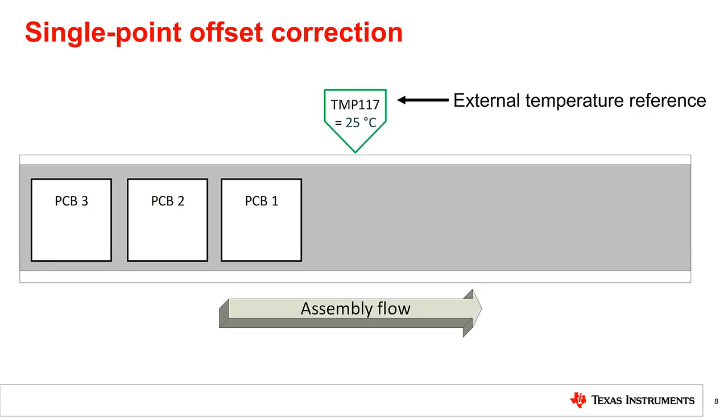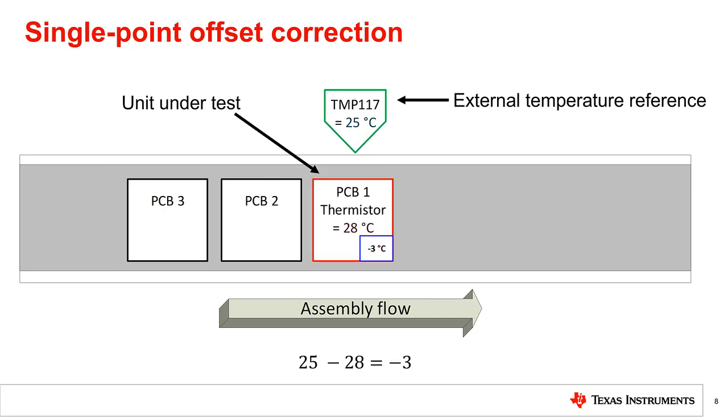A single point offset calibration at room temperature is a very simple, automatic, and fast process to guarantee the best possible accuracy for a linear PTC thermistor without the need for a temperature chamber. Let's take, for example, a small build of three PCBs ready to be powered up. Once the unit under test powers up for the first time, it will use its ADC to calculate the temperature using the onboard thermistor, which in this case is 28 degrees Celsius, and save that to a register.